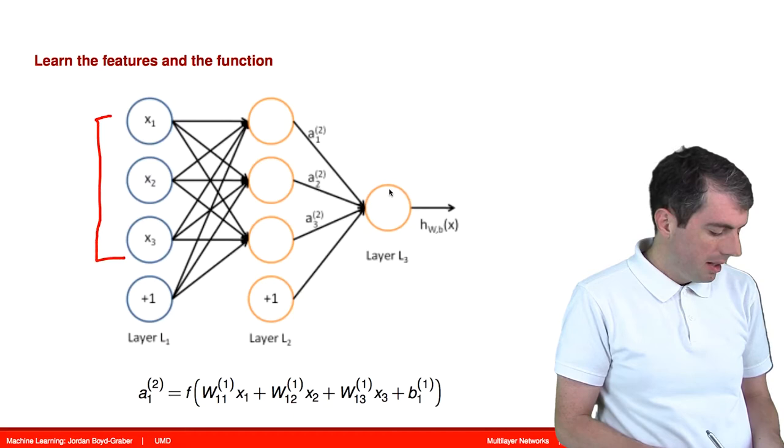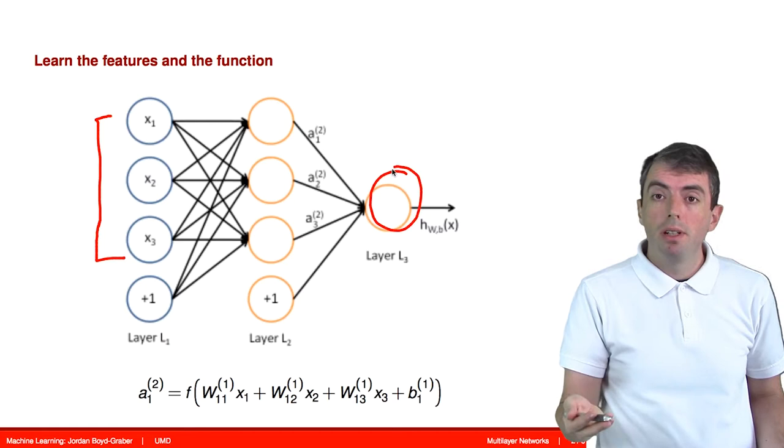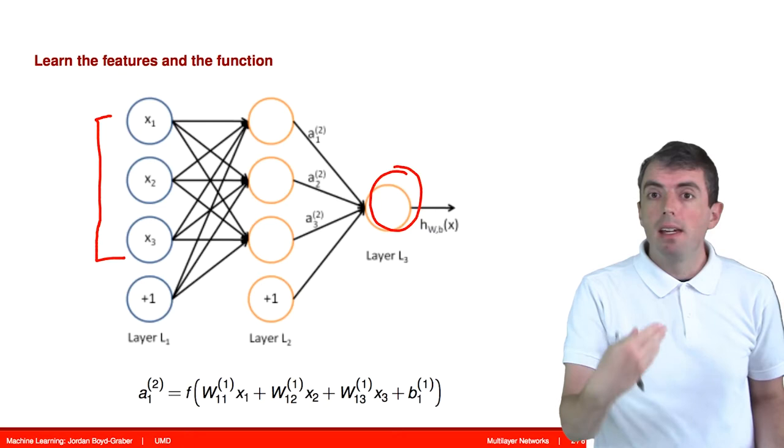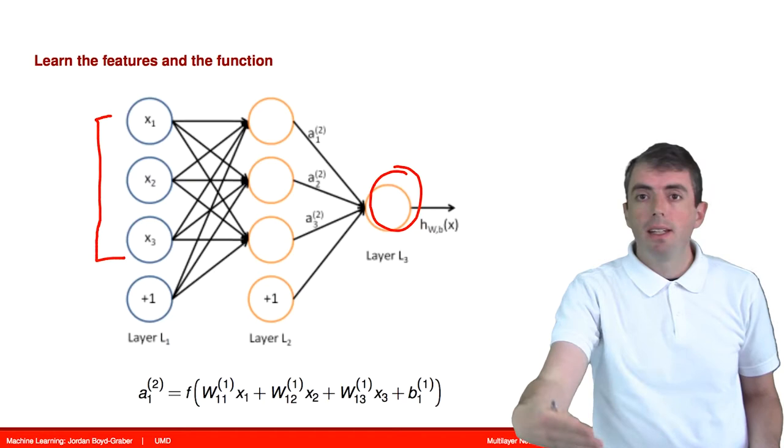If you're doing classification, your input are the raw inputs, for example, the pixels in an image or the words in a document. Those come in and you want a final output that says, is this a spam email or not, for example.